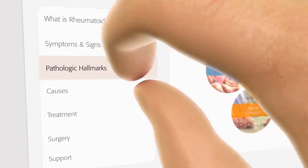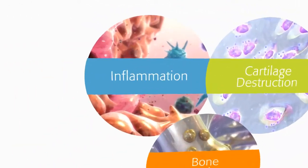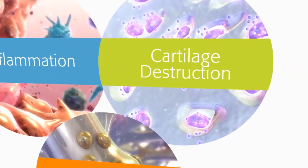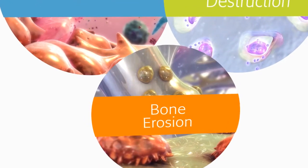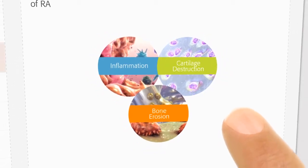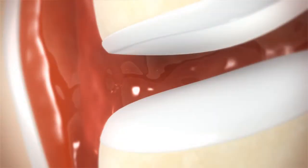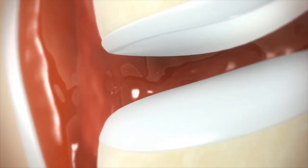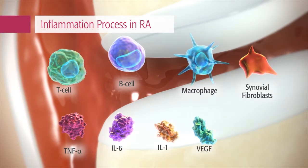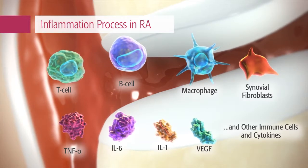The pathologic hallmarks of rheumatoid arthritis include inflammation of the joints, particularly the small joints in the hands, wrists, and feet, accompanied by cartilage destruction and bone erosion. Underlying inflammation leads to many of the characteristic signs and symptoms of RA, such as pain and swelling of the joints. Inflammation results from abnormal propagation and activation of many types of immune cells, resulting in the secretion of cytokines and other mediators that sustain and amplify the inflammatory environment.